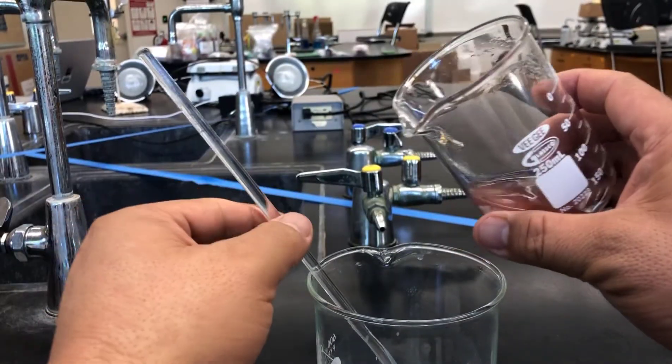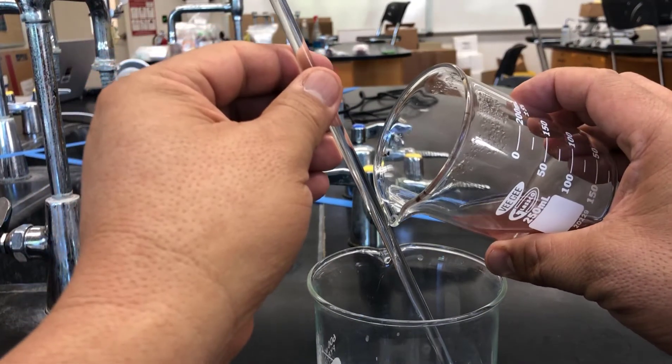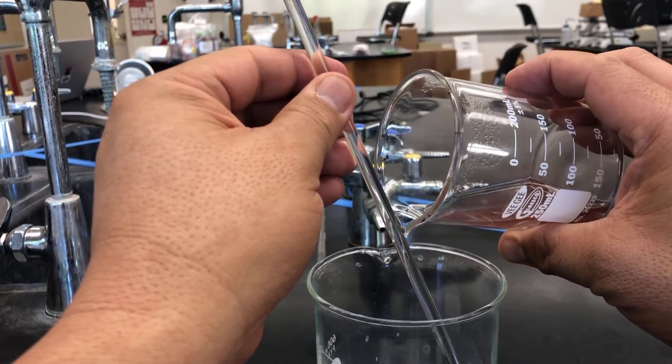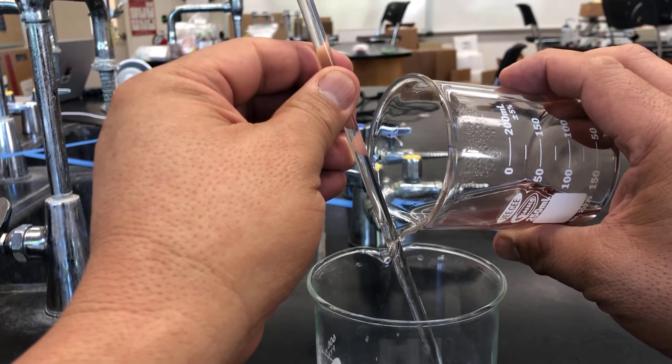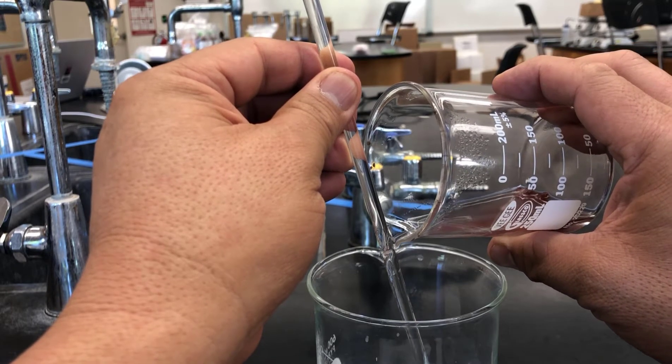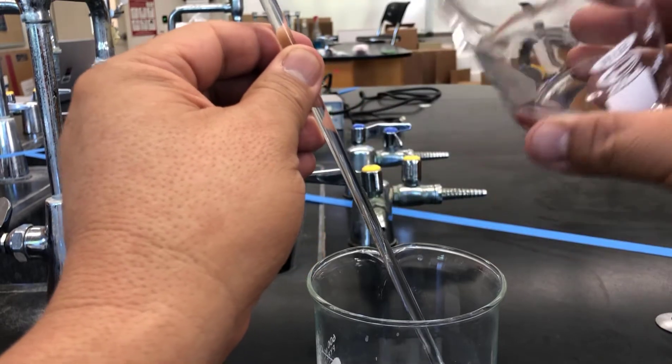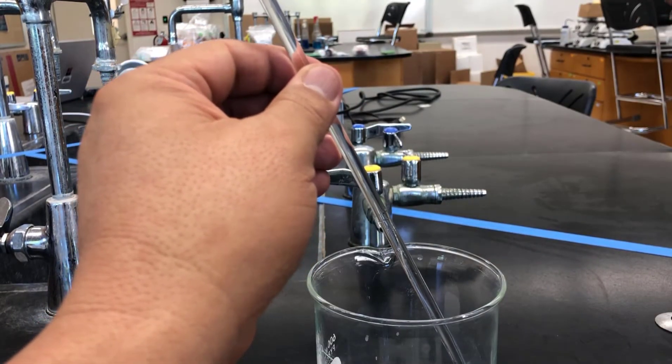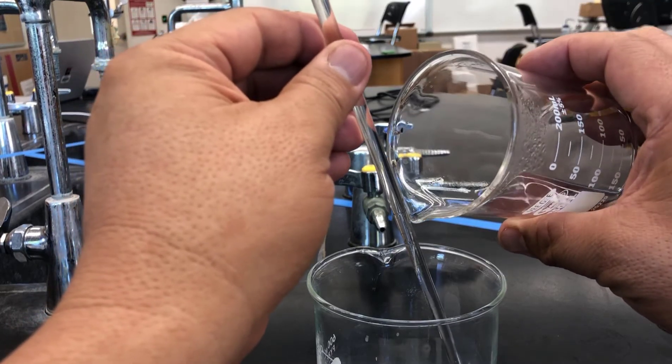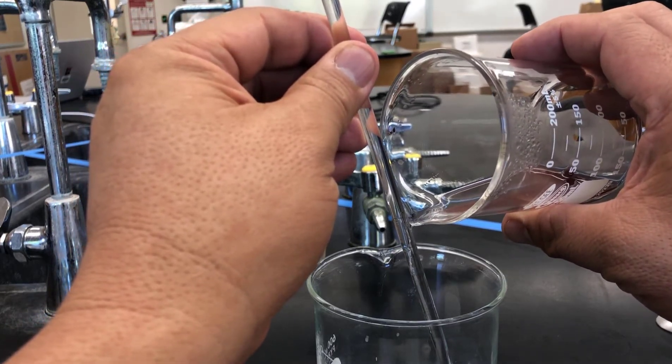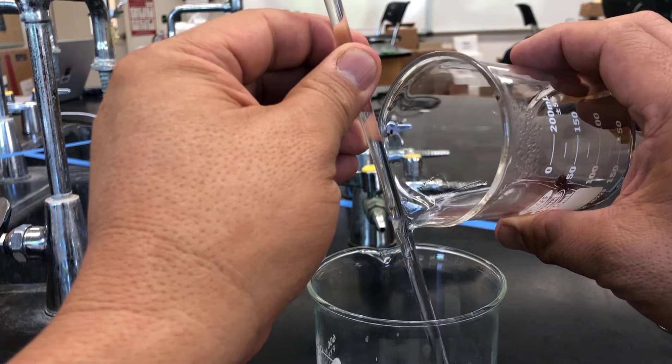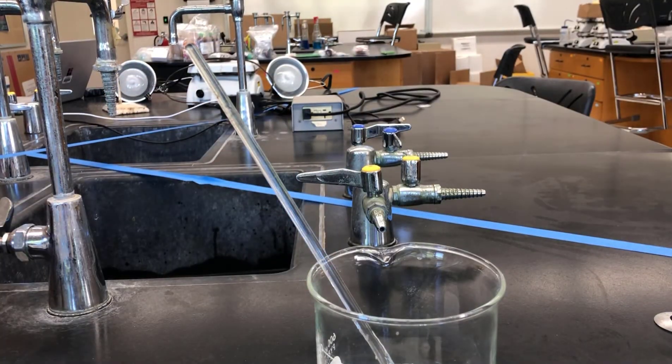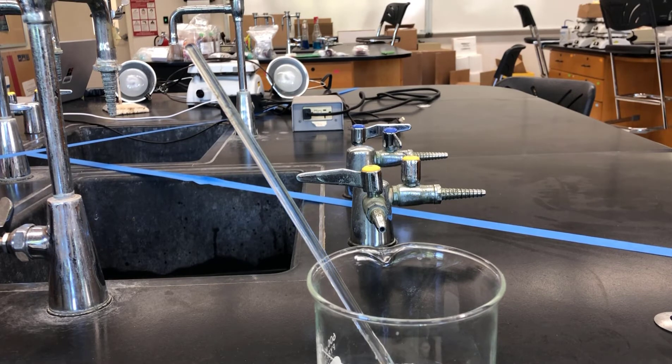There we are for this second decanting. It has finally settled pretty well. I'll try to get as much of the water out as I can without losing much copper. It's basically impossible not to lose a little copper. I'll let it settle again before I do the rest.